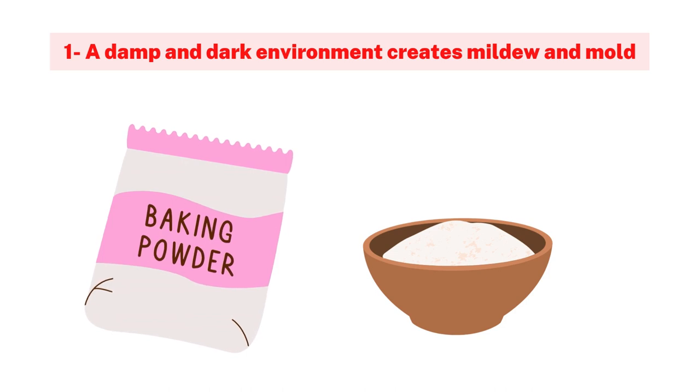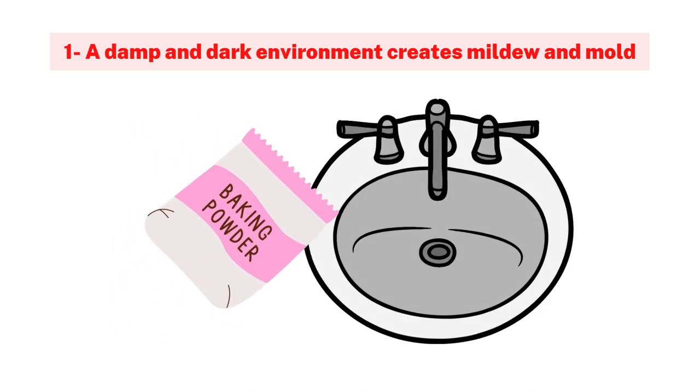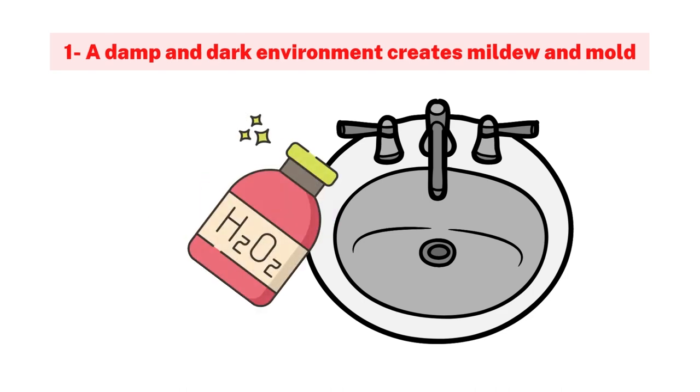For this, spread half a cup of baking powder over the drain. Wait 20 minutes, then put one cup of hydrogen peroxide over them.